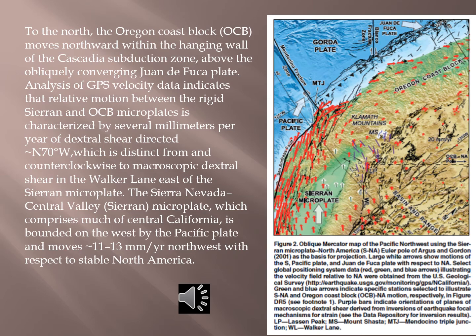The coast range is further subdivided into several smaller microplates. To the north, the Oregon Coast Block (OCB) moves northward within the hanging wall of the Cascadia subduction zone above the obliquely converging Juan de Fuca plate. Analysis of GPS velocity data indicates that relative motion between the rigid Sierra Nevada Central Valley microplate and the Oregon Coast Block microplate is characterized by several millimeters per year of dextral shear directed about N70°W, which is distinct from and counterclockwise to macroscopic dextral shear in the Walker Lane east of the Sierra microplate. The Sierra microplate, comprising much of central California, is bounded on the west by the Pacific plate and moves about 11 to 13 millimeters per year northwest relative to stable North America.